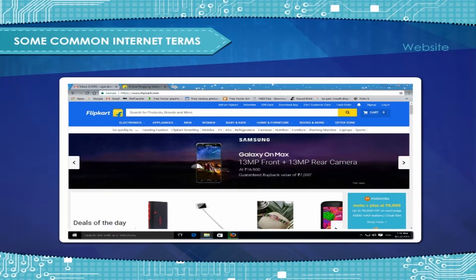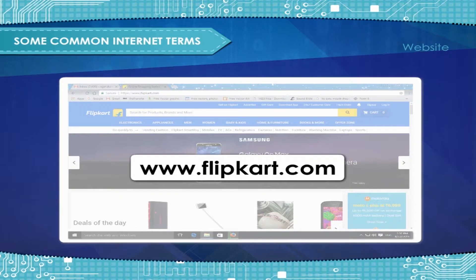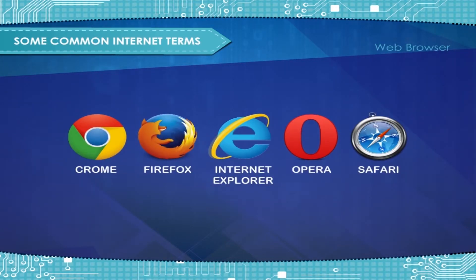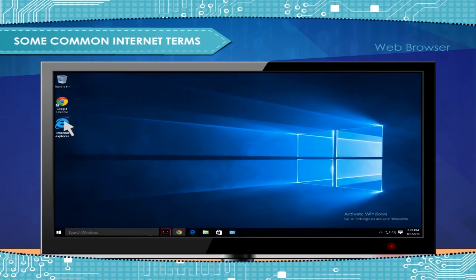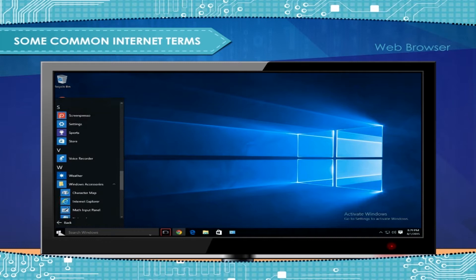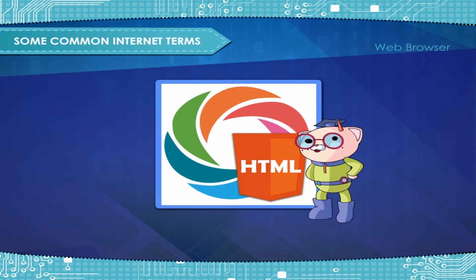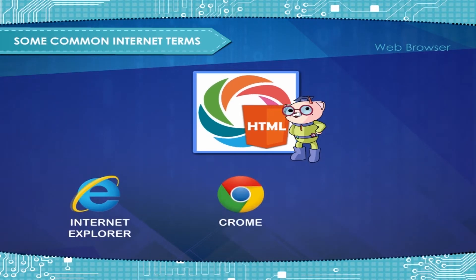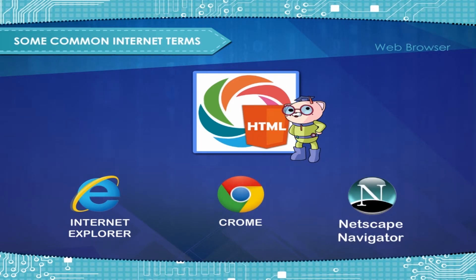A website is a collection of one or more interlinked web pages located on the internet, where a company, organization, or individual person puts their information. Each website has a unique web address. A web browser is the software that allows you to view and explore information on the web. We can enter the internet by clicking on the internet explorer icon on the desktop. Some common HTML web browsers are Internet Explorer, Google Chrome, and Netscape Navigator.